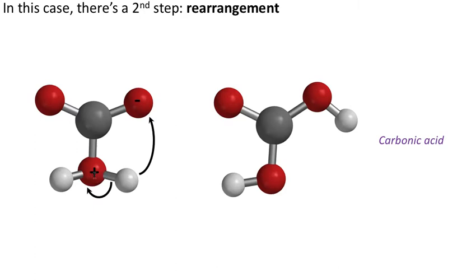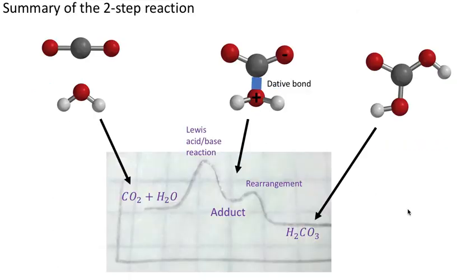What this adduct will actually do is pull those electrons back onto that oxygen and let the proton leave and attach it there to make what we recognize as carbonic acid.